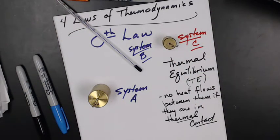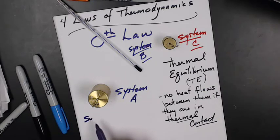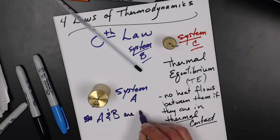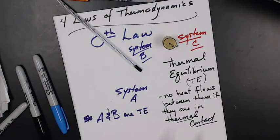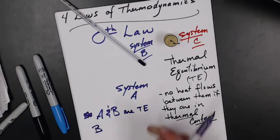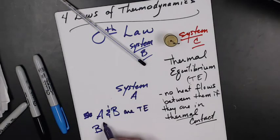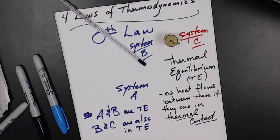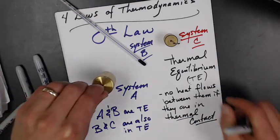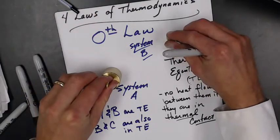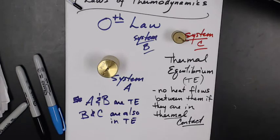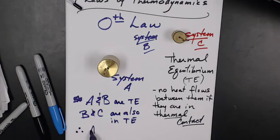So now A and B are in thermal equilibrium. So let's move A out of the way. Now if B and C are also in thermal equilibrium, that means that A and C are also in thermal equilibrium. You do this in math class, it's therefore A and C are in thermal equilibrium.